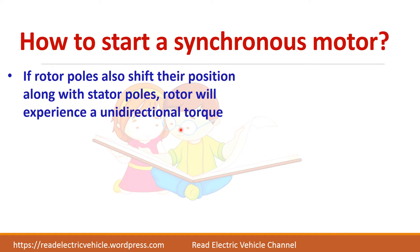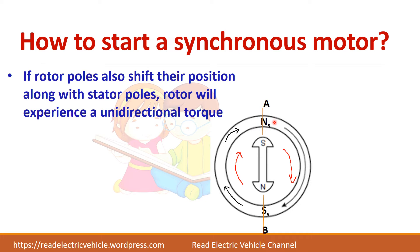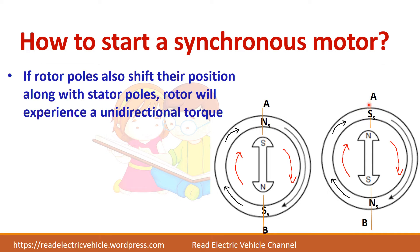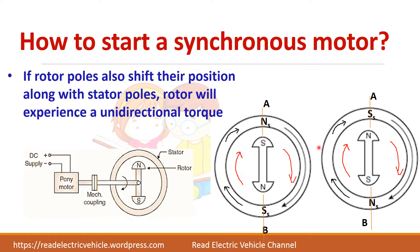Then how to start a synchronous motor? We have seen that the stator poles change their position every half cycle. If the rotor also changes its position according to the stator, the rotor will experience a unidirectional torque. In the first half cycle the north pole of the stator and south pole of the rotor are magnetically locked. In the next half cycle when the stator changes to south pole, the rotor should also rotate along with the stator so that the north pole of the rotor and south pole of the stator get linked. This can be done by using an external prime mover to make the rotor rotate at the same speed as the stator so that locking occurs.